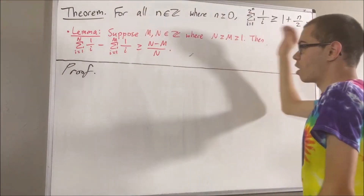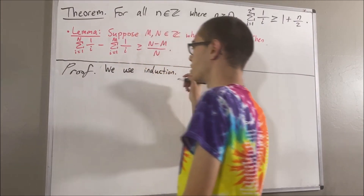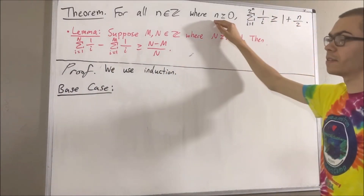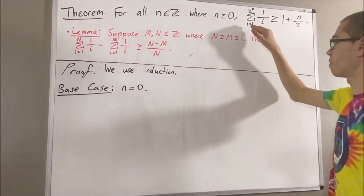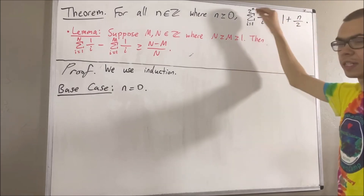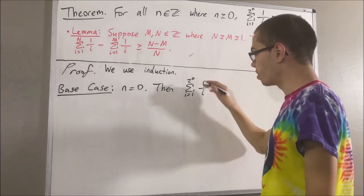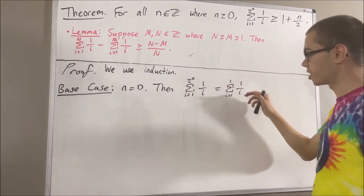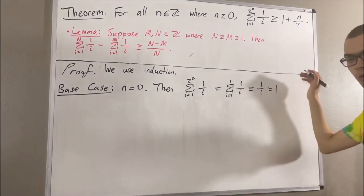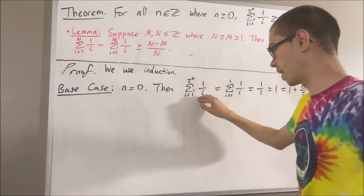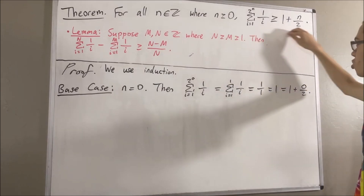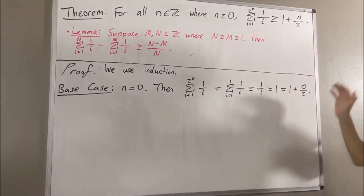Now let's get into proving this theorem. We're going to prove this by induction. Let's start with the base case. In the base case, we're trying to show that this is true in the case where n is equal to 0. So we want to show that the sum from i equals 1 to 2 to the power of 0 of 1 over i is greater than or equal to 1 plus 0 over 2. Now, we know that 2 to the power of 0 is equal to 1, and the sum from i equals 1 to 1 of 1 over i is equal to 1 over 1, which is equal to 1, which is equal to 1 plus 0 over 2. So we have shown that the left-hand side equals the right-hand side, and therefore it is greater than or equal to the right-hand side. So this completes the base case.